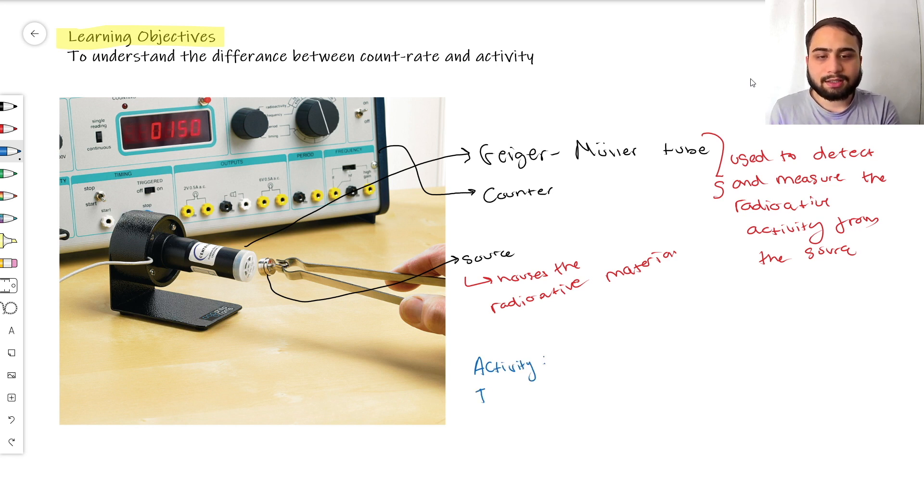Activity is the number of decays per second. Activity talks about how many nuclei inside the source itself are actually decaying.